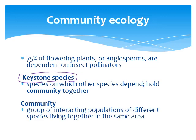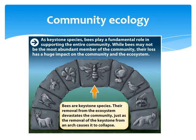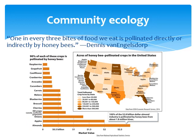A community is when you have more than two different populations interacting in the same area. When we consider all abiotic and biotic factors, that's when we have an entire ecosystem. As a keystone species, bees don't necessarily have to be the most abundant member of that community, but their loss has a really dramatic effect — like taking out the keystone of an arch, everything else would collapse. That's a keystone species, and that's why they're so important.